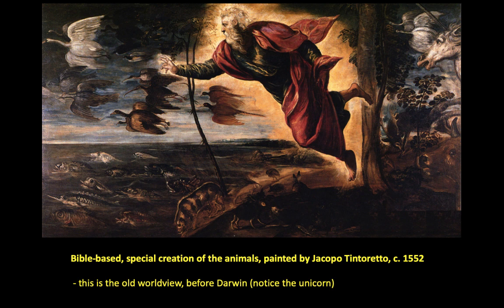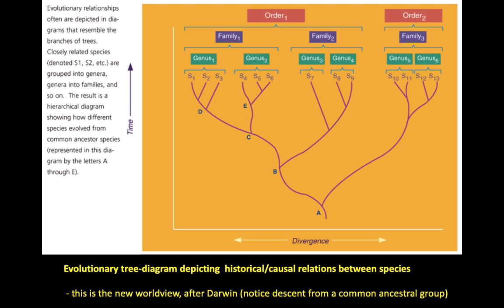Here's an old worldview — Bible-based, the special creation of animals — depicted in a painting from the 1550s by Giacomo Tintoretto. Notice the unicorn, God in the middle making the animals — fish, birds. This is an old worldview, an old paradigm — in fact the foundation of science up until about the middle 1700s. And here's what we got now: an evolutionary tree diagram depicting historical causal relations between species. This is the new worldview or paradigm after Darwin. Notice the descent from a common ancestral group.